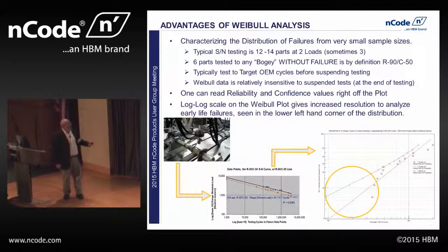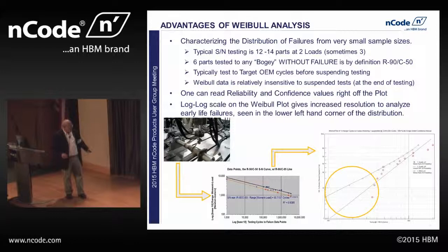Typically you'd test 12 to 14 parts at two load levels, sometimes three. You saw an SN curve earlier — in this one, cycles go across the bottom and load range up and down here. You've got two loads, the blue parts. Here's the 90th percentile line, the R90C50 line running along there. But you really can't tell what the spread about that curve is — you could impose a Gaussian or non-Gaussian distribution, but it's real hard to see. That's why Weibel.